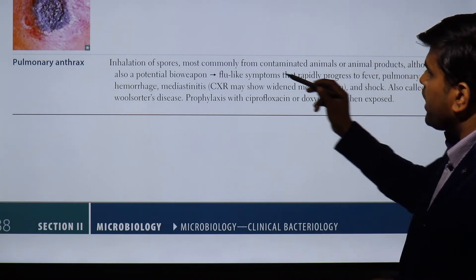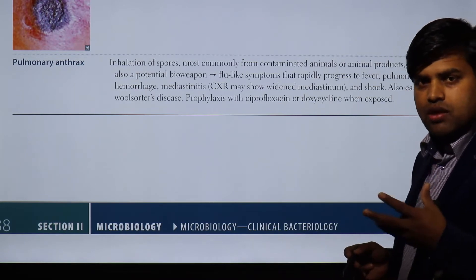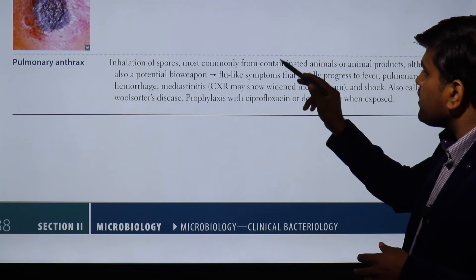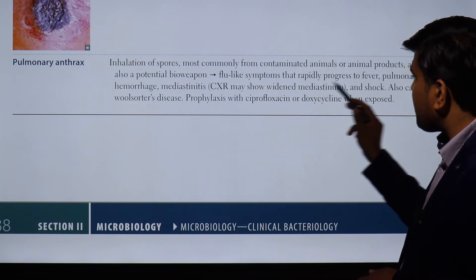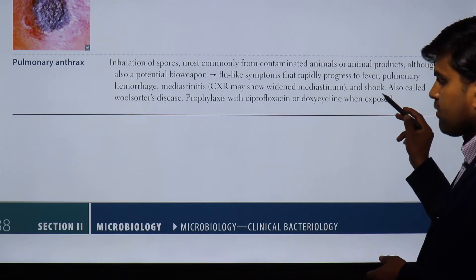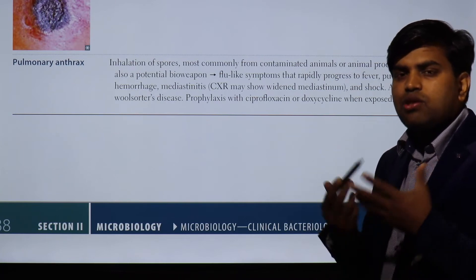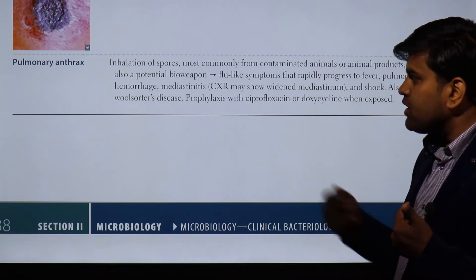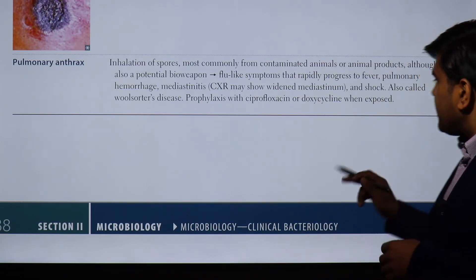In nature, inhalation of spores typically occurs from contact with contaminated animals or animal waste, such as from cows or donkeys. Once inhaled, spores germinate into bacteria, which release toxin and damage the lungs. Initial symptoms are flu-like, then rapidly progress to fever, pulmonary hemorrhage, and mediastinitis. Chest X-ray shows widening of the mediastinum.